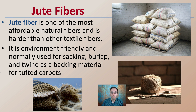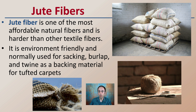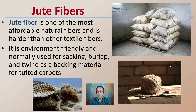Jute fibers are one of the most important and affordable natural fibers, and are harder than other textile fibers. They are typically made into burlap bags and jute twine because they're environmentally friendly, and are also used for tufts of carpet where a lot of structure is needed. The fact that they're biodegradable makes them great for outdoor use — for example, hanging tomato plants. While biodegradable, they don't break down very quickly and can be left in the field for a while before naturally decomposing over time.